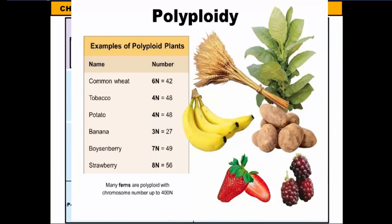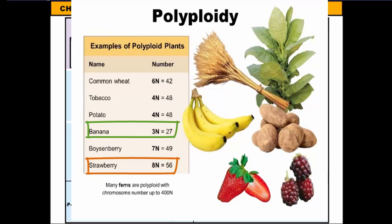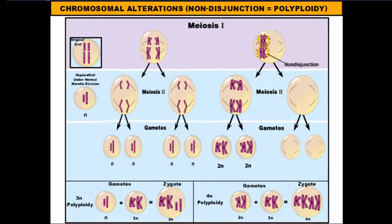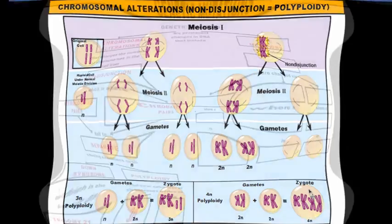If you take a look at this diagram, here's a list of the different polyploid foods that you eat — on this list you'll notice things like bananas and strawberries. That's how nondisjunction alters the chromosomal makeup of our cells. Now let's go back to our concept map and talk about gene mutations.